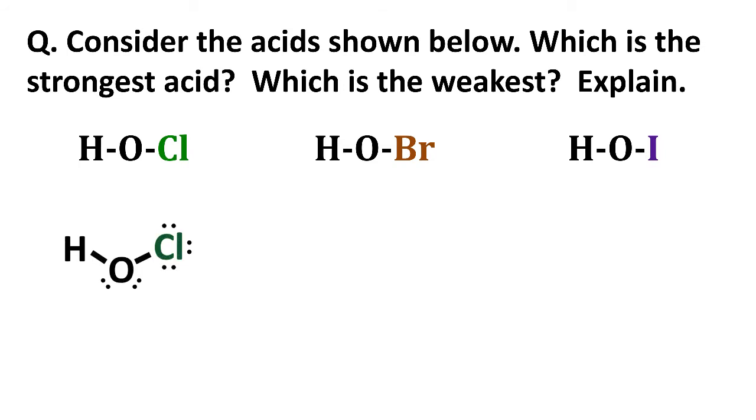If we look at the Lewis structures of each molecule, we'll see some distinct similarities and then a difference. Each is HO something, and the something is either chlorine, bromine, or iodine. In each case, it's a halogen. And presumably, the difference in strength of acids has to do with which particular halogen it is.